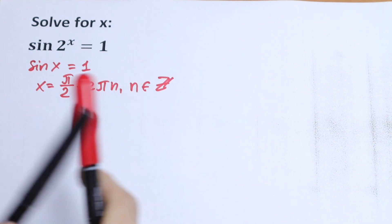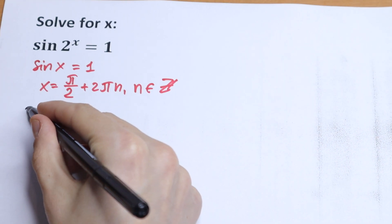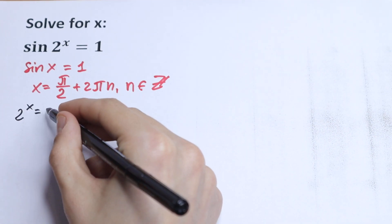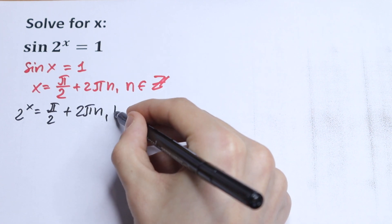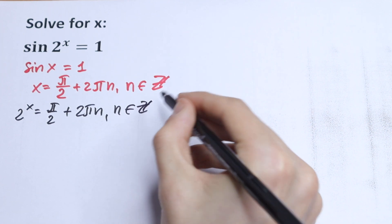We will have as a result, 2^x = π/2 + 2πn, n ∈ Z.